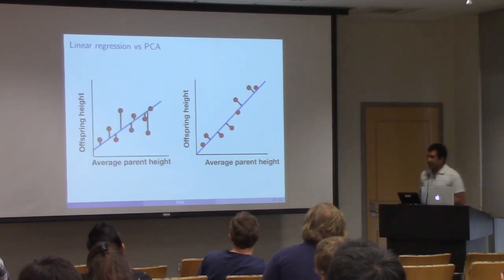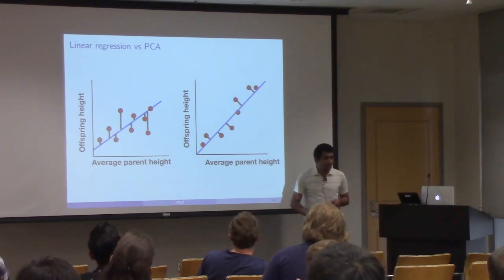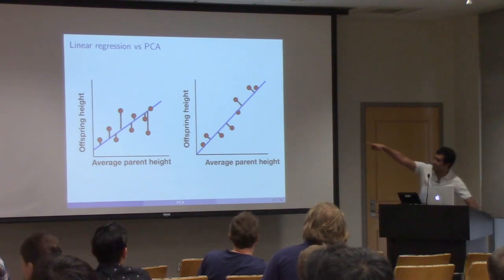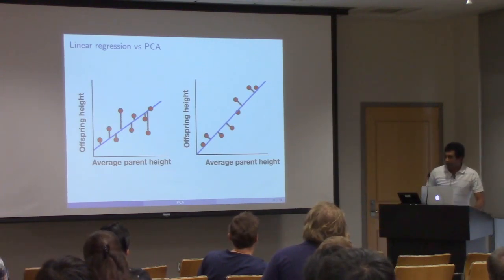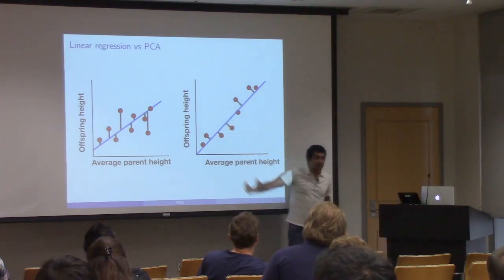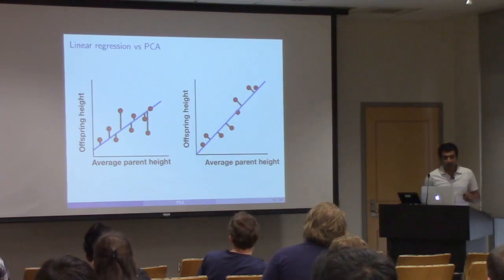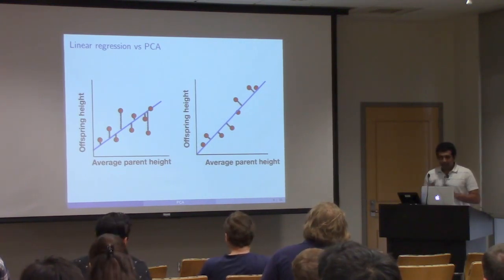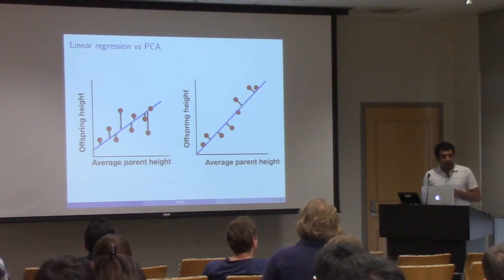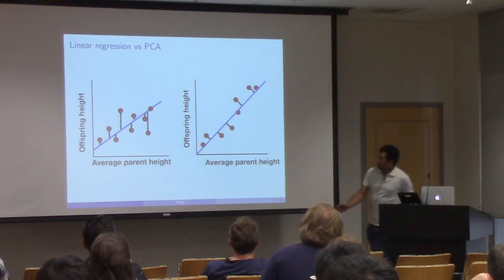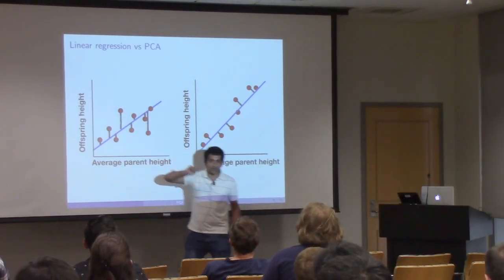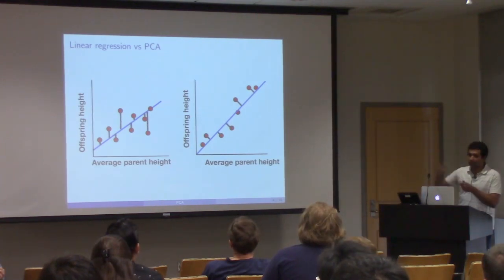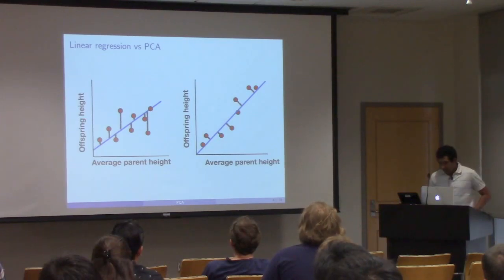It's good to understand the relationship between linear regression and PCA. Linear regression tries to minimize the vertical distance from each point to the line, whereas principal components minimizes the Euclidean projection from these points onto the line. Another way to think about PCA is as doing a regression where your x-axis has errors in them. If you assume both x and y have an error and you try to fit a line, it turns out the natural algorithm to do is to compute PCA.